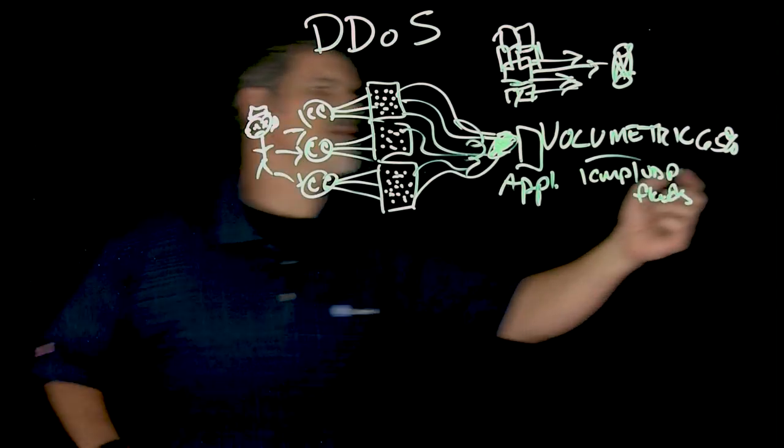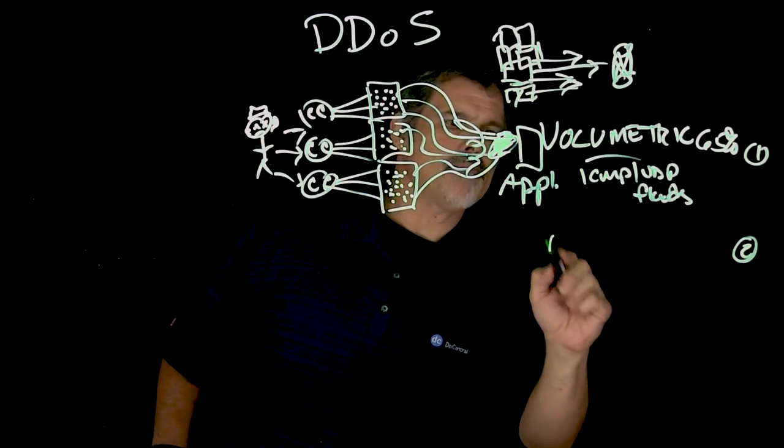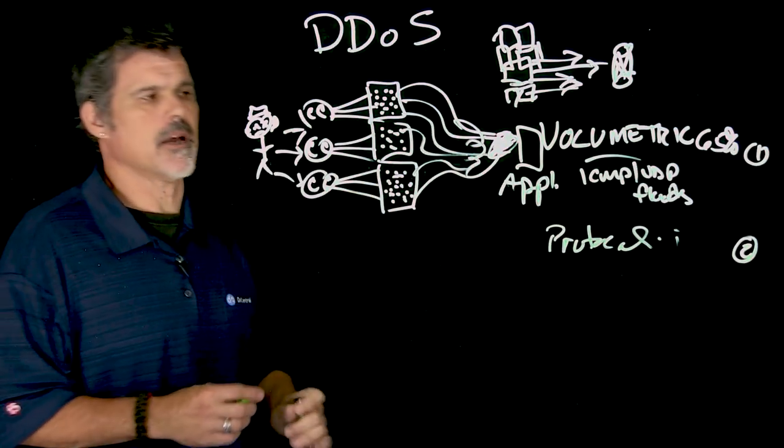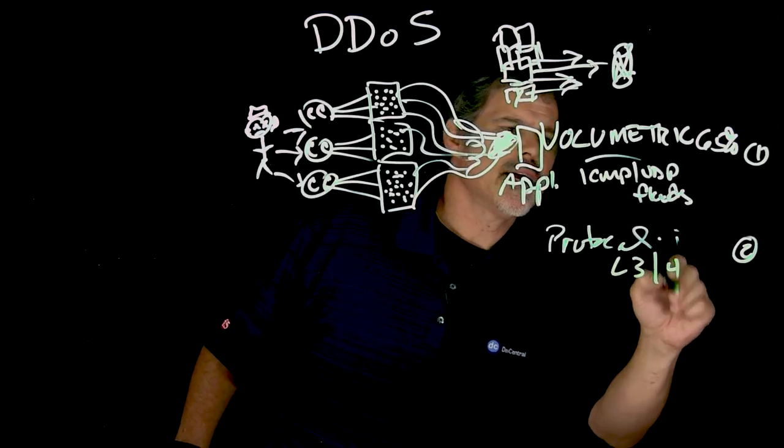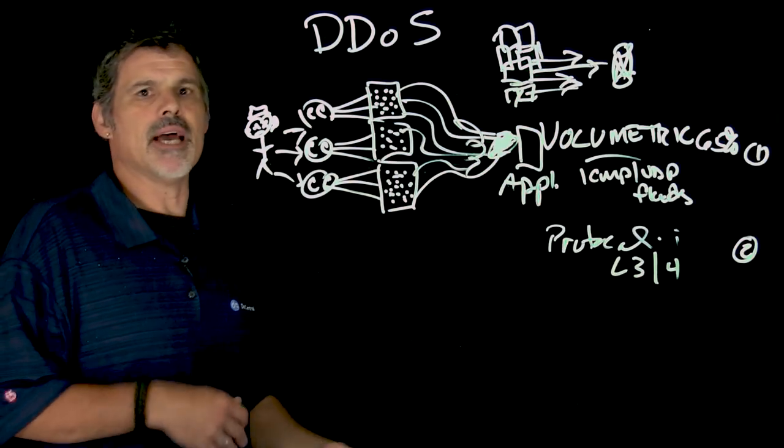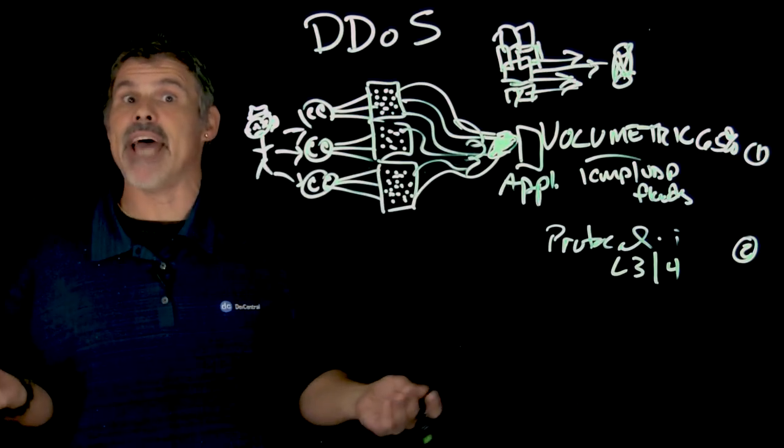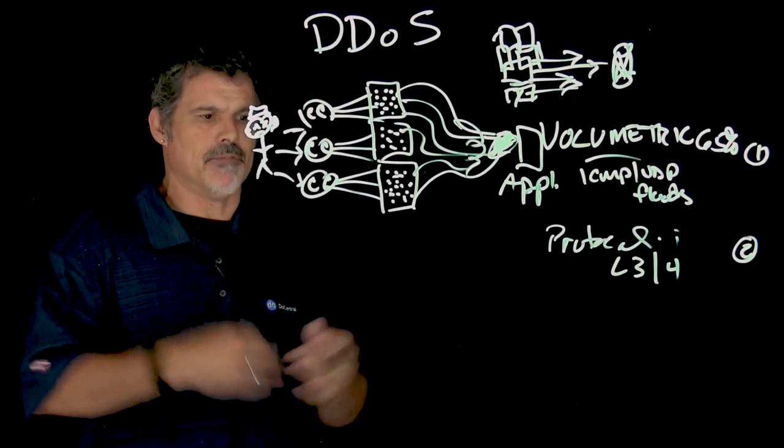The second type would be a protocol attack, sometimes called a traffic attack. And this is where they target layer 3 and layer 4 access, like TCP, UDP, ICMP. You might have heard things like a ping of death is what's called a protocol attack, or a packet flood.